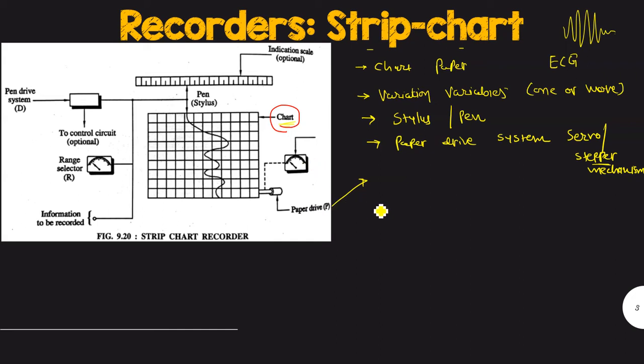Mostly the stepper mechanism is used for the purpose of paper drive. The speed of this chart or the drive is normally controlled by the speed selector. The speed selector is shown in this figure. The chart speed which is normally used inside of the strip chart recorder is in the range of 1 to 100 mm per second.